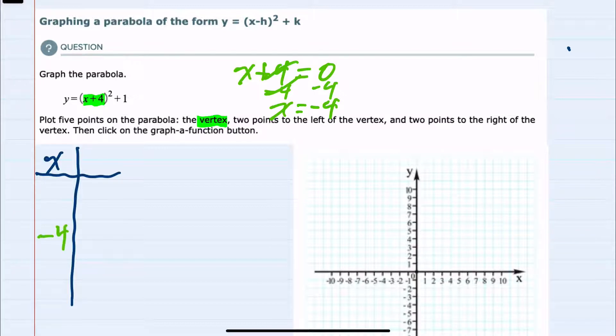So our vertex will be when x equals -4, and since we're plugging in two values to the left and two values to the right, moving to the left, I'll plug in -5 and -6. Those two values are to the left of -4, and then moving to the right, -3 and -2 will serve as our five values that we'll be plugging in to get coordinates for.